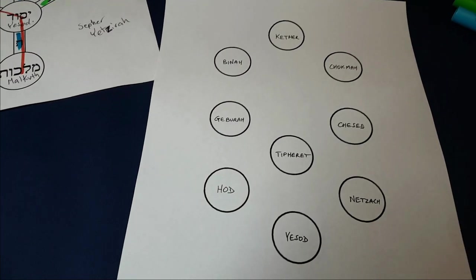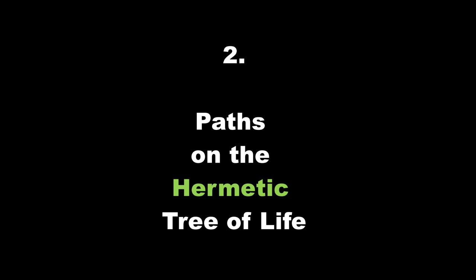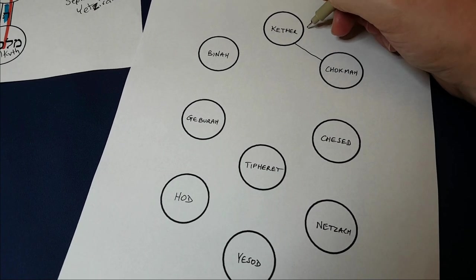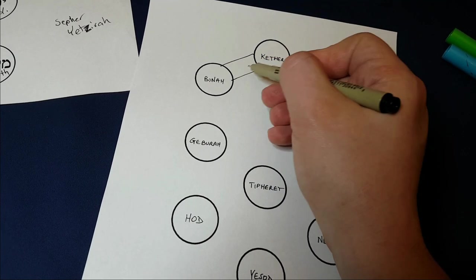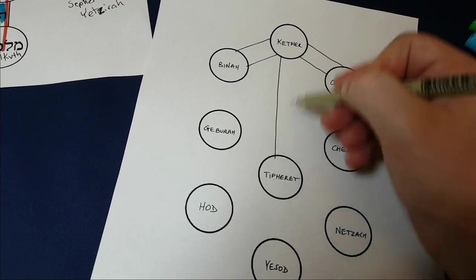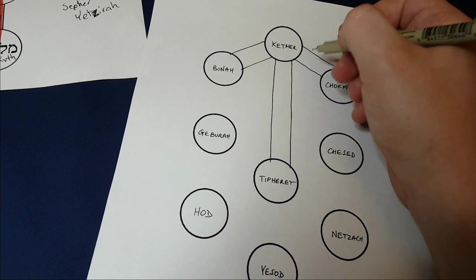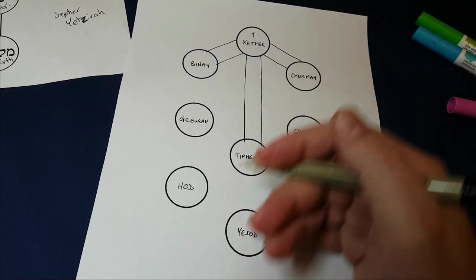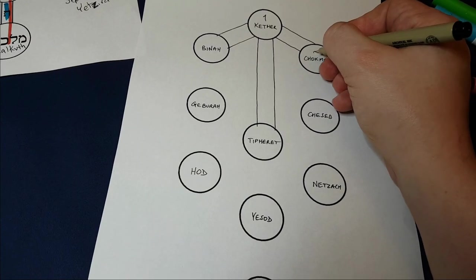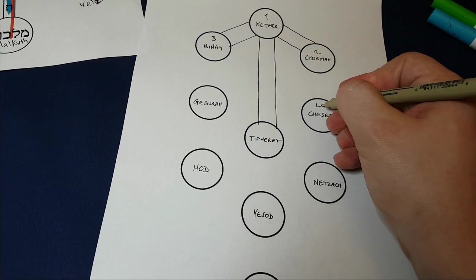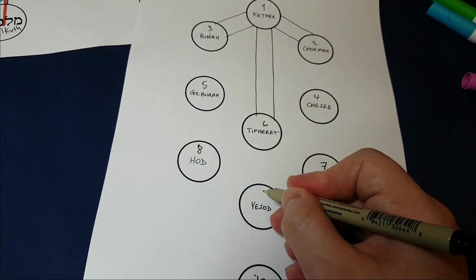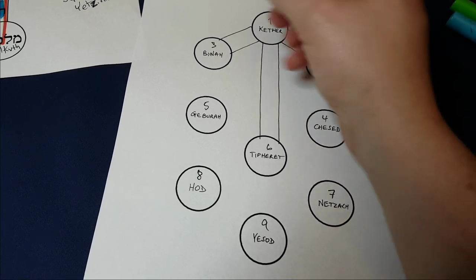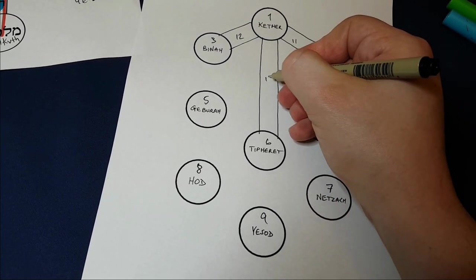Whereas in the Hermetic tradition, it's slightly different. First of all, there is, over here, a path between Kether and Chokmah. And there's also the same going from Kether to Binah. And from Kether to Tiphareth. Let me just number these. If these are the numbers 1 to 10, with 2, 3, 4, 5, 6, 7, 8, 9, and 10 down here.